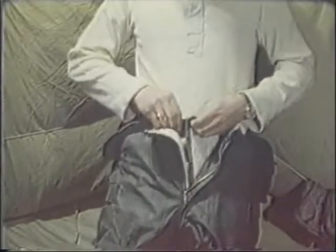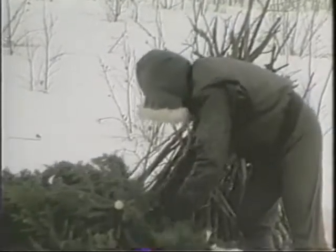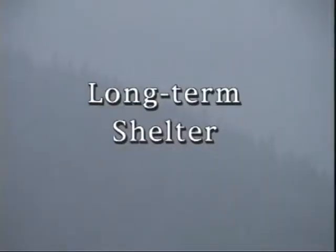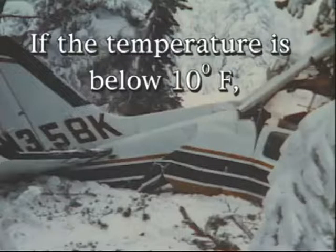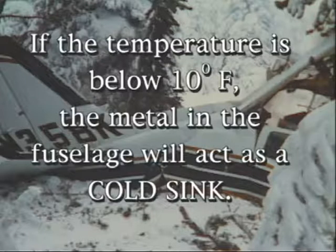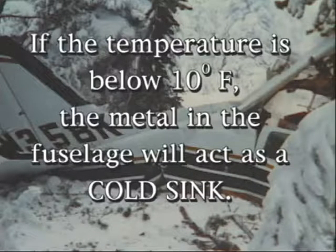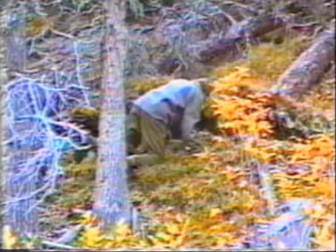The fourth layer can consist of quilted pants or over-boots. By wearing proper clothing, you have taken the first step in providing shelter for yourself. However, this does not mean you should rely solely on your clothing for shelter. A shelter from the elements needs to be constructed as soon as time and conditions permit. Materials to construct a shelter may be scarce. It is important to keep in mind that if the temperature is below 10 degrees Fahrenheit, shelter other than the aircraft should be sought, because the metal in the fuselage will act as a cold sink and draw heat from the body.